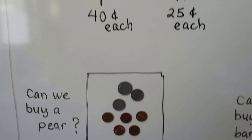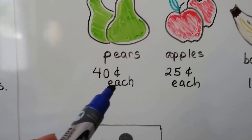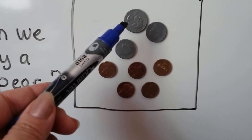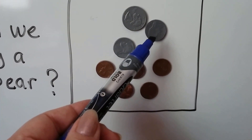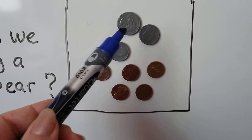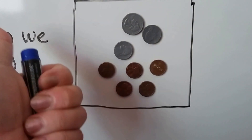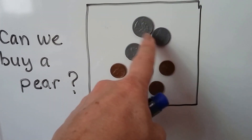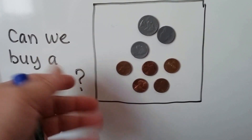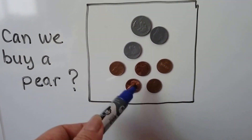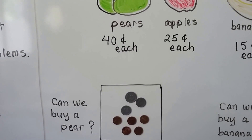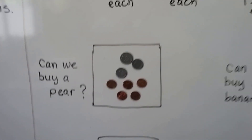Can we buy a pear with the money in the box? Remember, pears are 40 cents each, so we need 40 cents. We have a quarter (25 cents), a nickel (5 cents), another nickel, and five pennies. Let's count: 25, then counting up through the nickels and pennies — 30, 35, then up to 40. There's 40 cents, so yes, we can buy one of the pears.